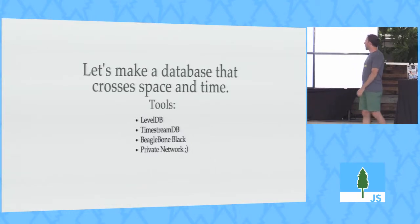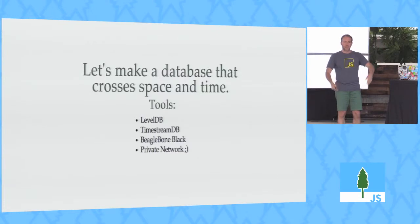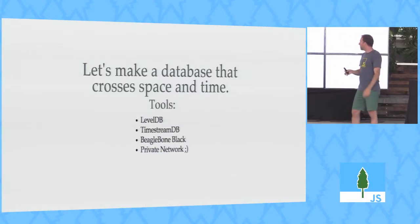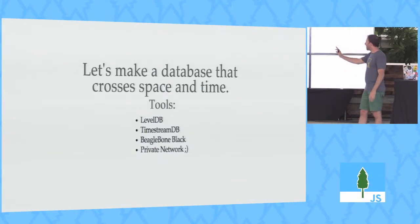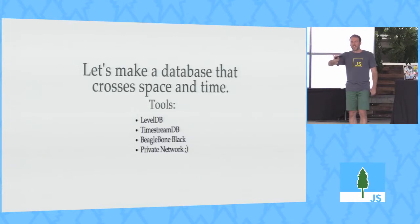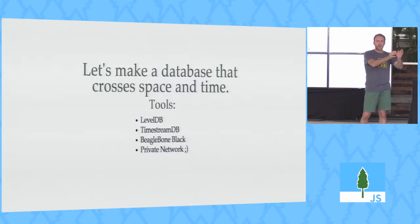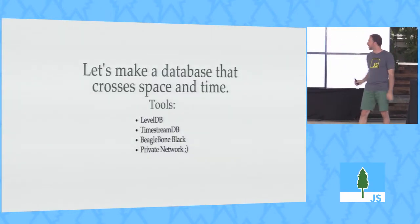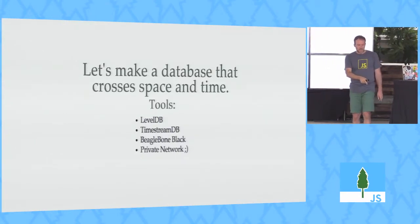So let's make a database that crosses space and time. And what I mean by time is that most sensor networks are really talking about data over time. You have a thermostat, and it says, well, right now, it is really hot. And then, right now, it's still really hot. But all this happens over time, and you get trends of the data, and that's what's really interesting. But then also, you could think of that replication system as a way it spans time. Right now, the data is over here, but eventually, it's going to trickle over to this place where I'm going to do my analysis later. So what I've used to build this are LevelDB, TimestreamDB, BeagleBone, and my own private Wi-Fi network because conference Wi-Fi.